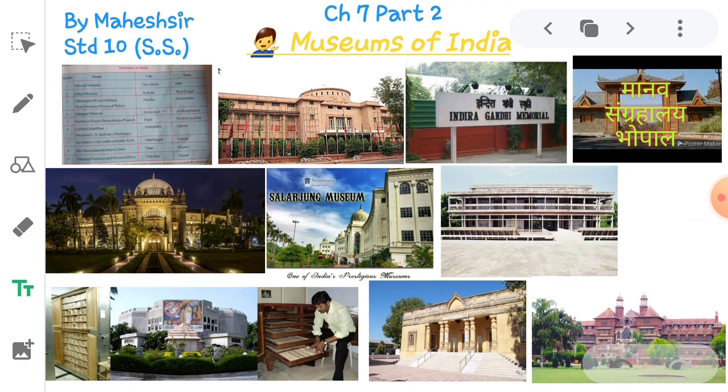This video is for Standard 10, Subject Social Science, Chapter 7, Part 2. In the first video we discussed about what is the need of preservation of cultural heritage, what is the necessity and importance of tourism industries, and some acts made in our constitution.